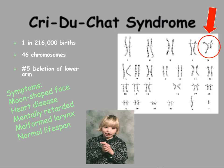Cri du Chat syndrome — named because the baby cries like a cat — is characteristic of a deletion in one arm, specifically the Q arm of chromosome 5, and it causes that particular syndrome.